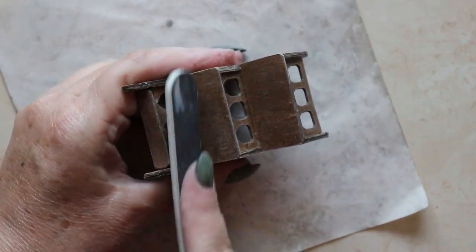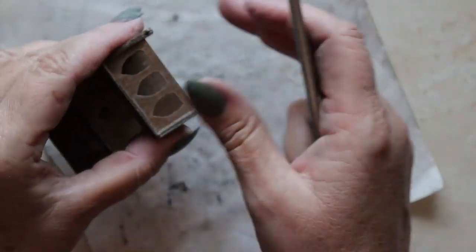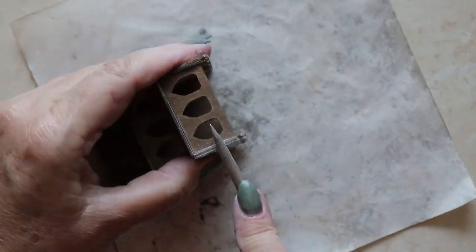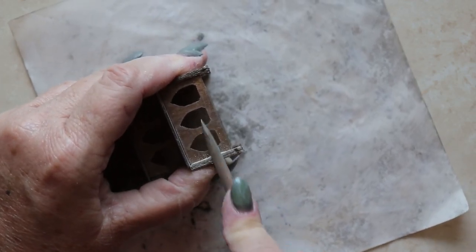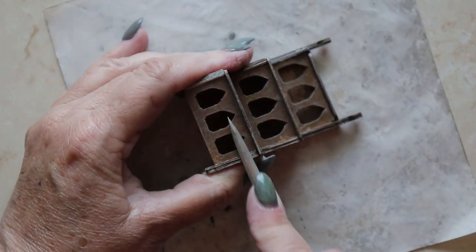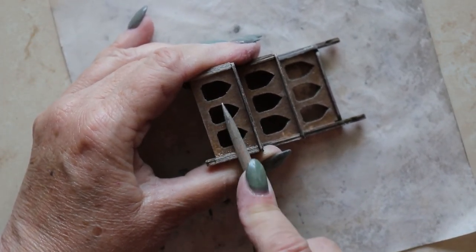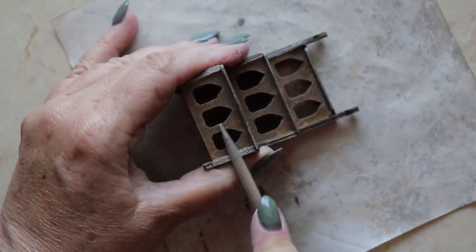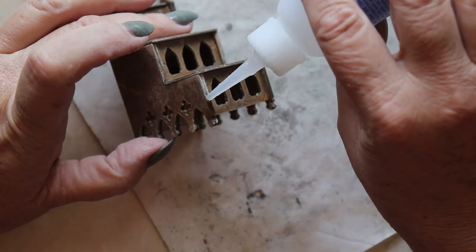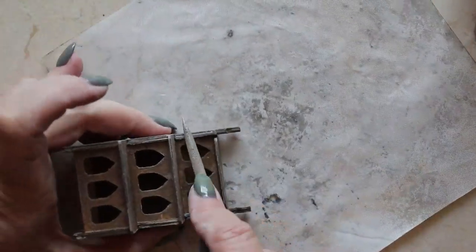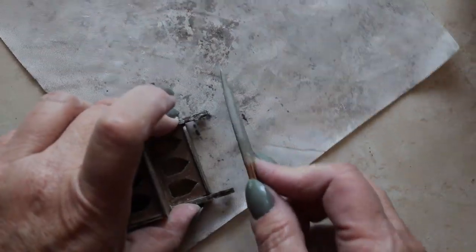In theory, the piece is complete at this stage. You could simply leave it at that. But I prefer to clean up as much of the edges of the piece as possible with a lot of sanding. I use files and sandpaper and emery boards.